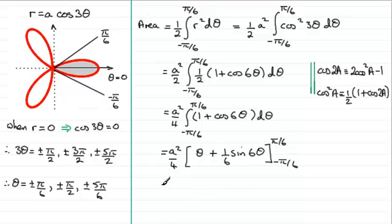If we substitute pi upon 6 in, first of all, we've got a squared over 4 on the outside. We've got pi upon 6 here, and then the sine of 6 times pi upon 6, that's the sine of pi, which is 0. From this we subtract what we get when we put minus pi upon 6 in. That's minus pi upon 6, and for this one, we're going to have the sine of minus pi, which is 0 as well.